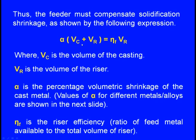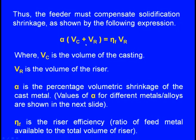Alpha into (Vc + Vr) is equal to eta_f into Vr, where Vc is the volume of the casting, Vr is the volume of the riser, and alpha is the percentage volumetric shrinkage of the cast metal. Different shrinkages for different metals will be seen in the next slide. Eta_f is the riser efficiency, which is defined as the ratio of feed metal available to the total volume of the riser. The left-hand side represents the total shrinkage of the casting as well as that of the riser, and this total shrinkage is to be compensated by the riser. Eta_f multiplied by the volume of the riser gives the amount of liquid metal available for feeding the casting as well as the riser.